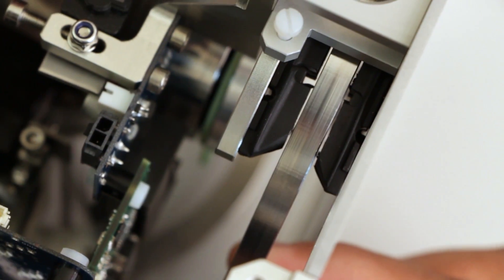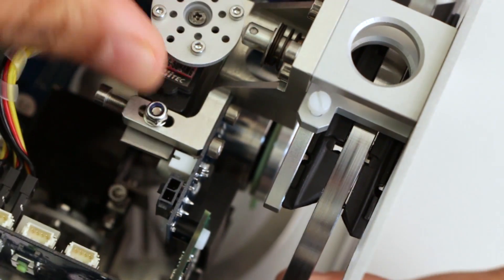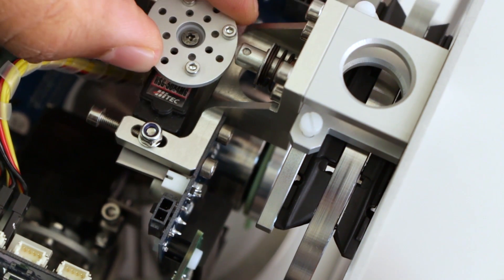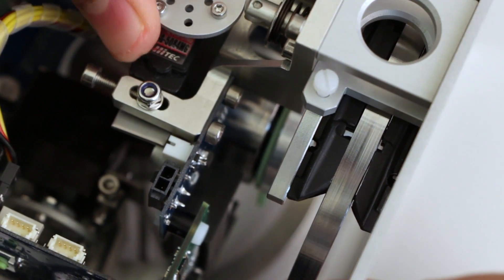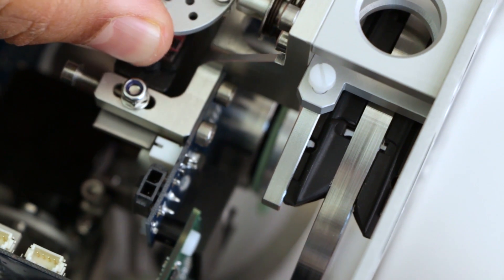These brakes are actuated by servo motors. They have an elliptical head, and when you rotate it, they squeeze the brake in. It's a simple mechanism to suddenly brake.